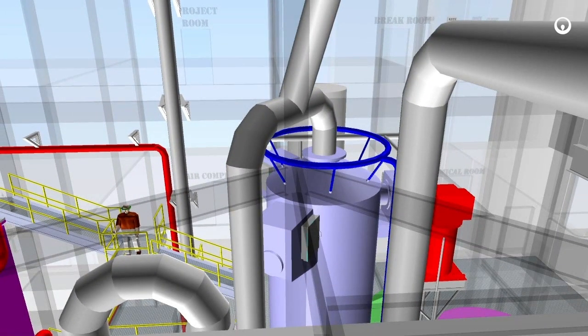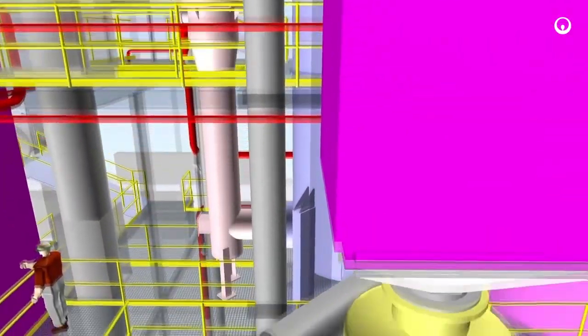Treated flue gas from the wet ESP travels to the induced draft fan, which provides the system with a push-pull pressure design.